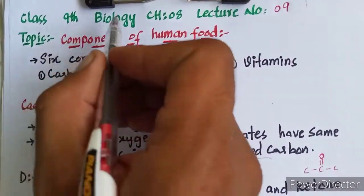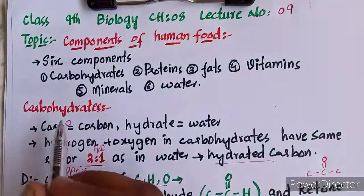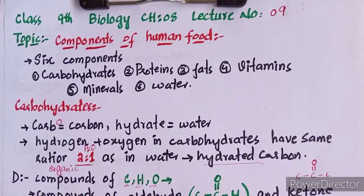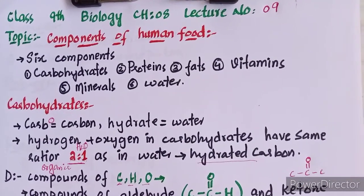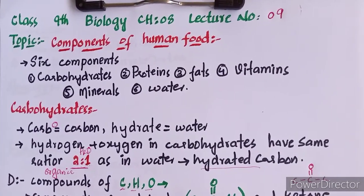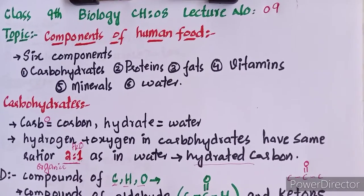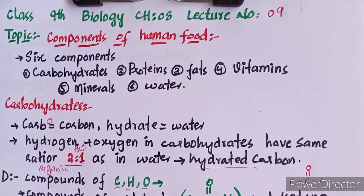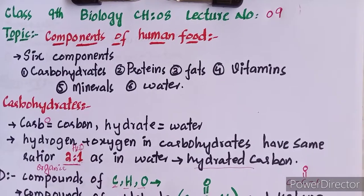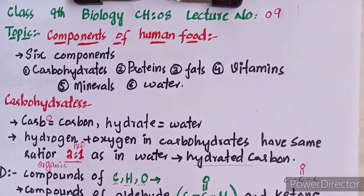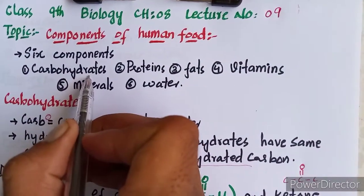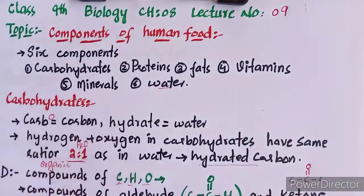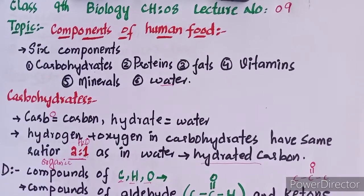Bismillah ar-Rahman ar-Rahim. Class 9th Biology, Chapter 8, Lecture 9. Today's topic is components of human food. Humans need food to obtain energy, and food is also needed for various other processes in the body. Human food consists of 6 components: carbohydrates, proteins, fats, vitamins, minerals, and water. We will explain each one in detail.